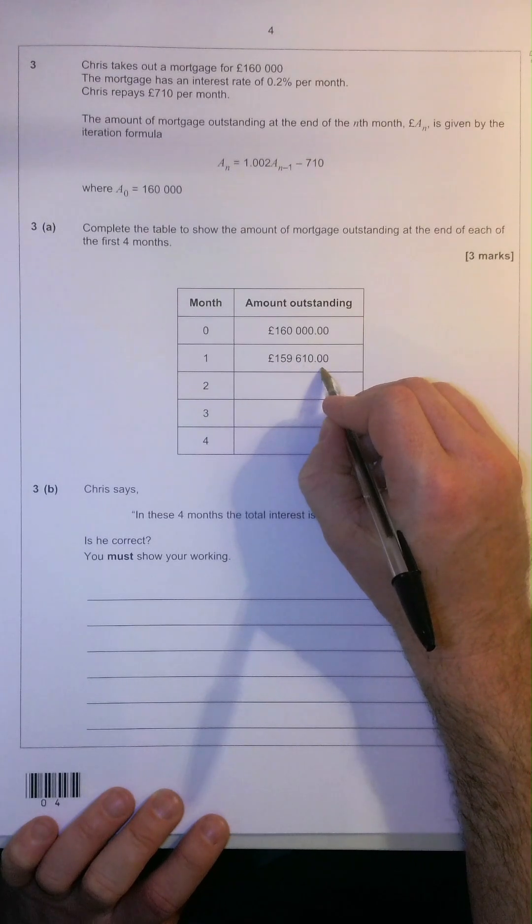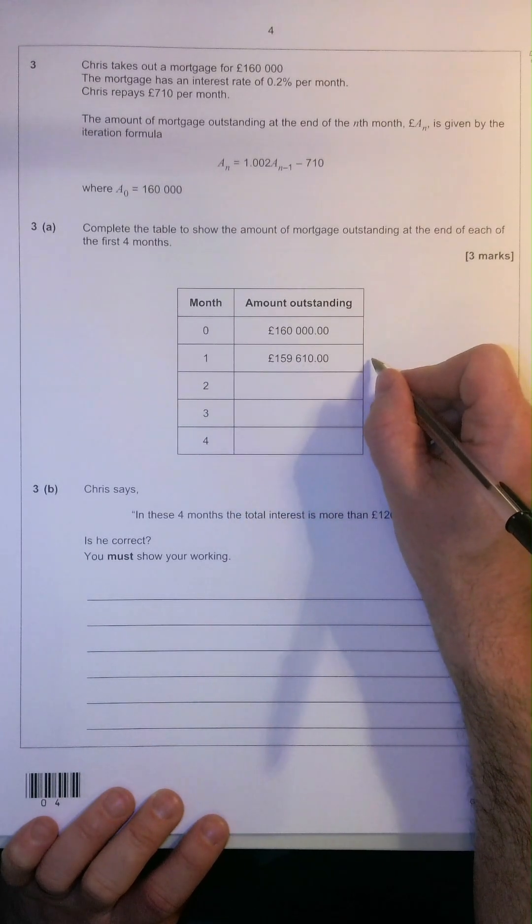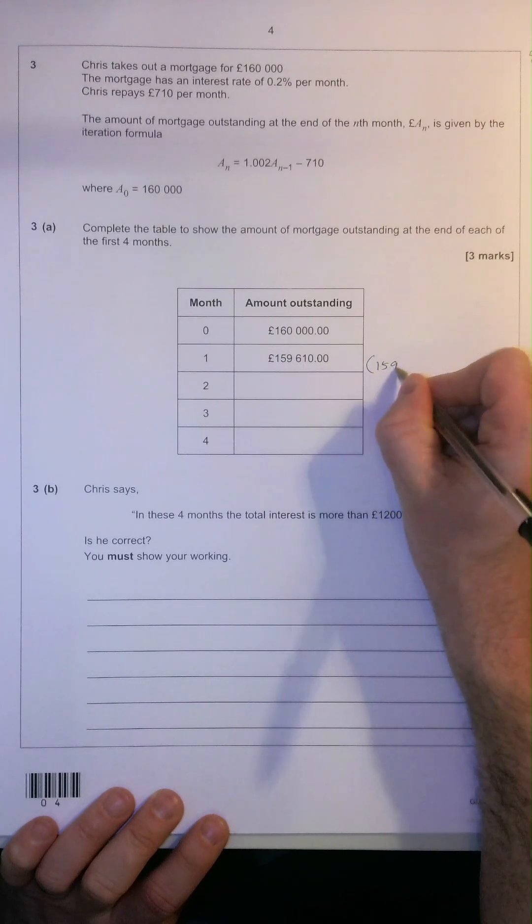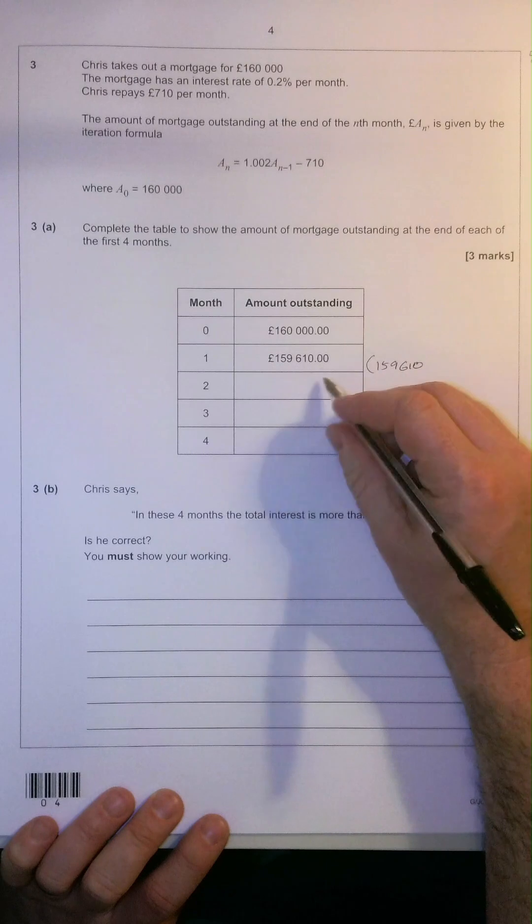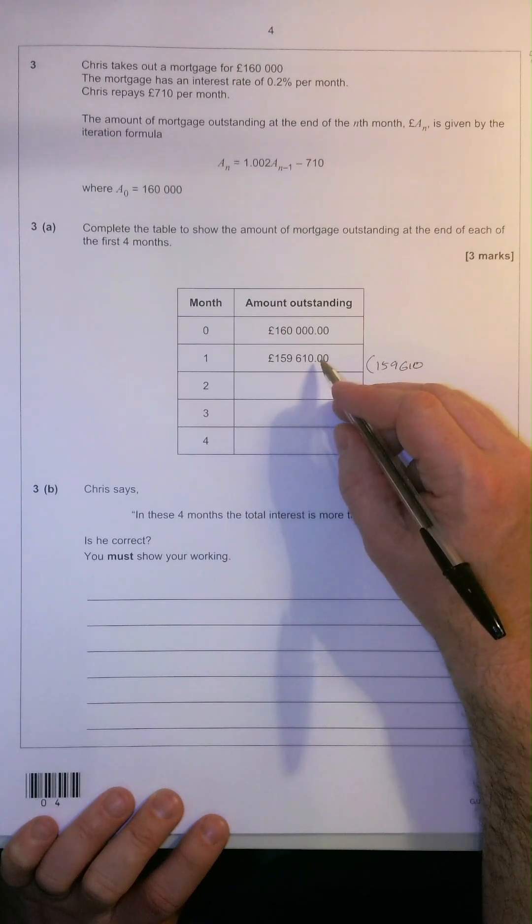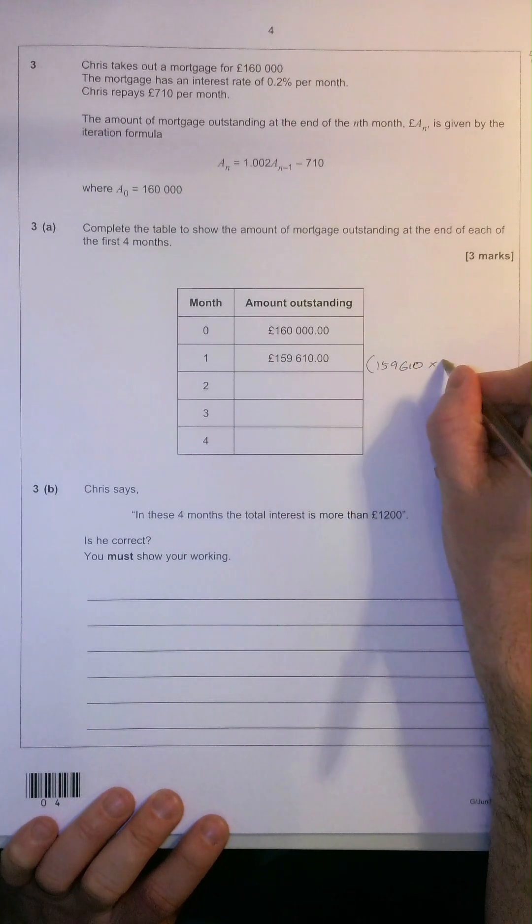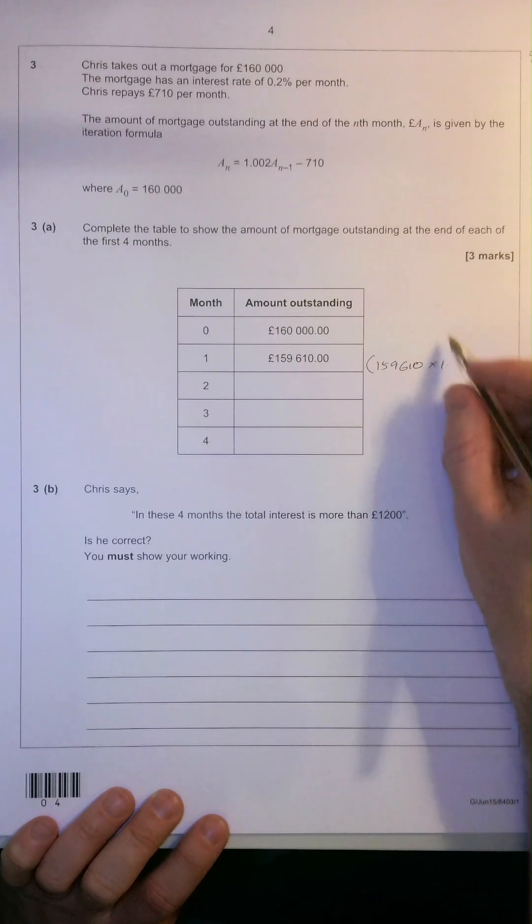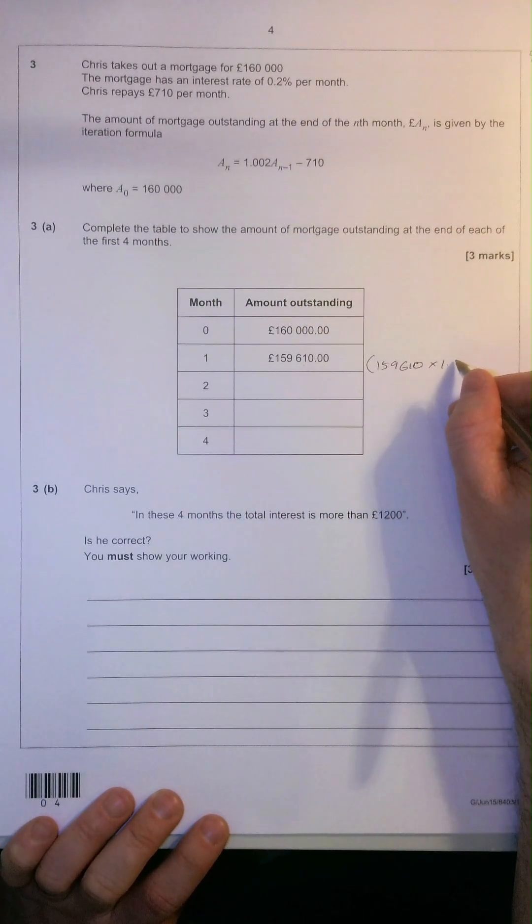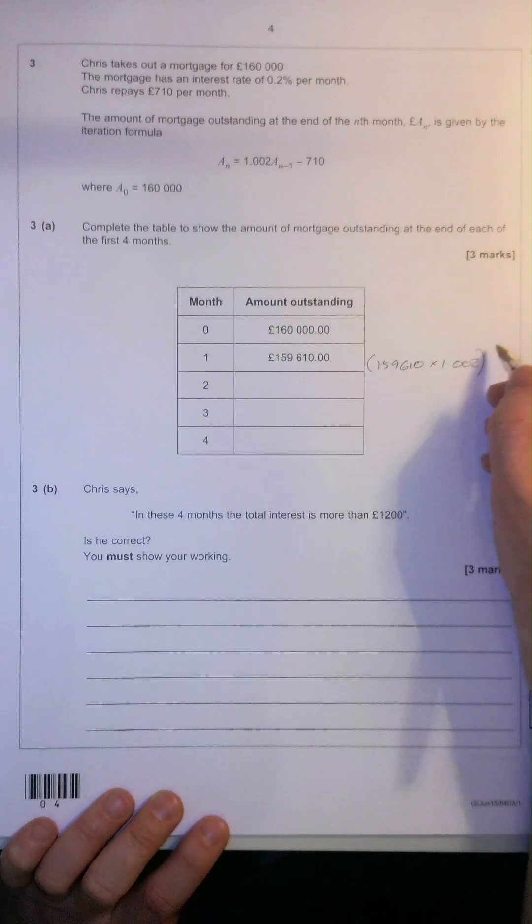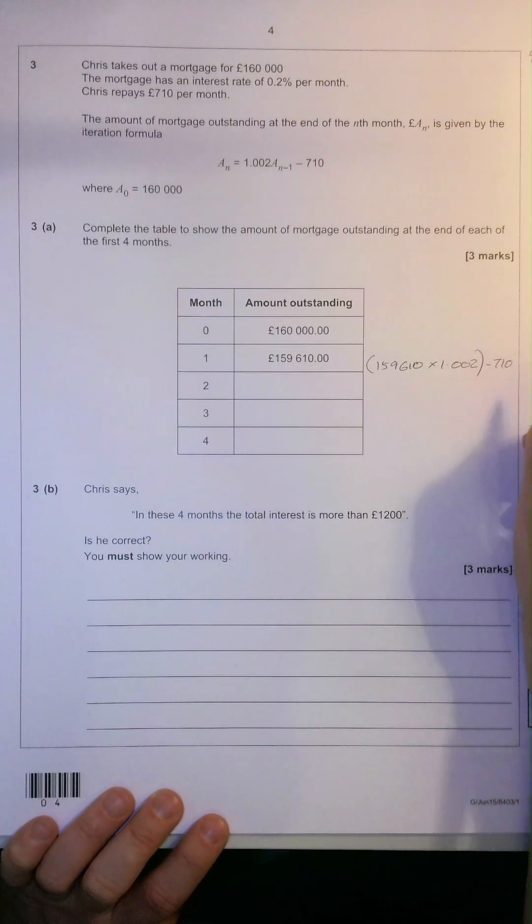How do we actually get the next one then? Well, what we can do, we can take the $159,610 that he's got left to pay at the end of one month and we can times it by the interest rate, which in this case, of course, is 0.2% per month, so 1.002. But, of course, he pays off $710 per month, so we take away the $710.